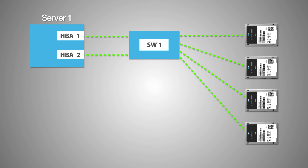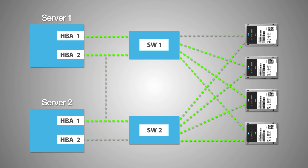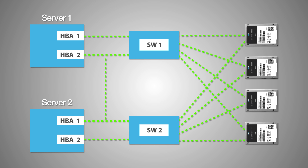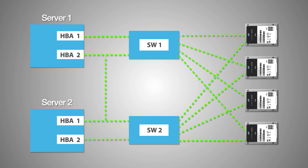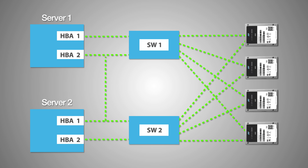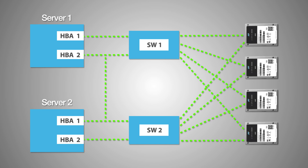However, if the server is lost, access to the data would still be lost. Therefore, depending on the associated cost, the addition of a second server could achieve a fully redundant system where both servers could access all of the dual ported drives via two switches. In this configuration, the dual ports are active-active, enabling both controllers to access any drive port at any time, representing a fully redundant dual ported configuration.